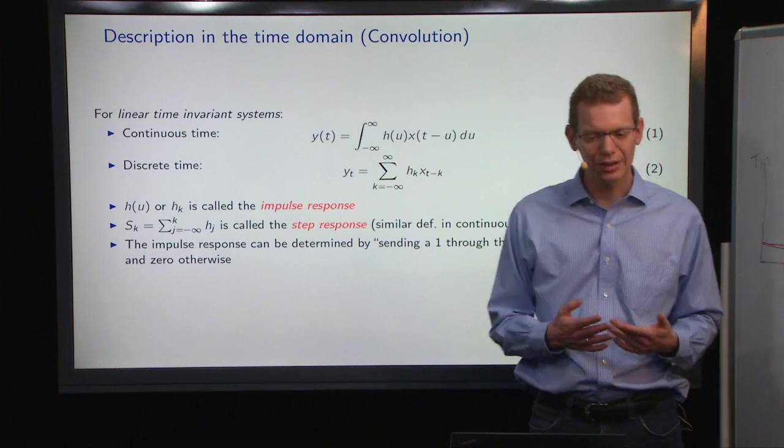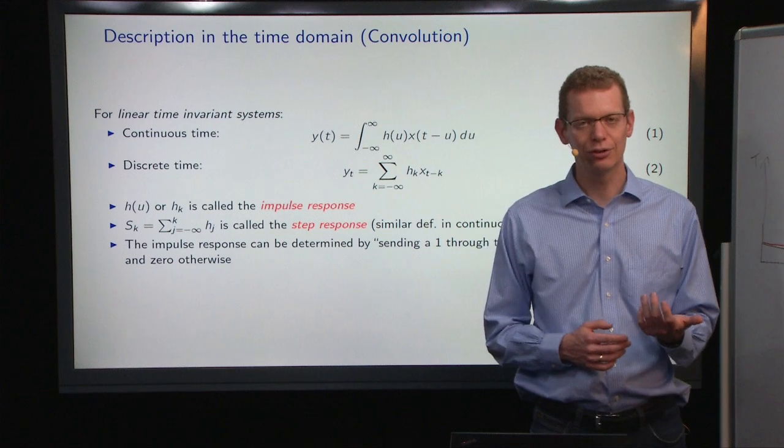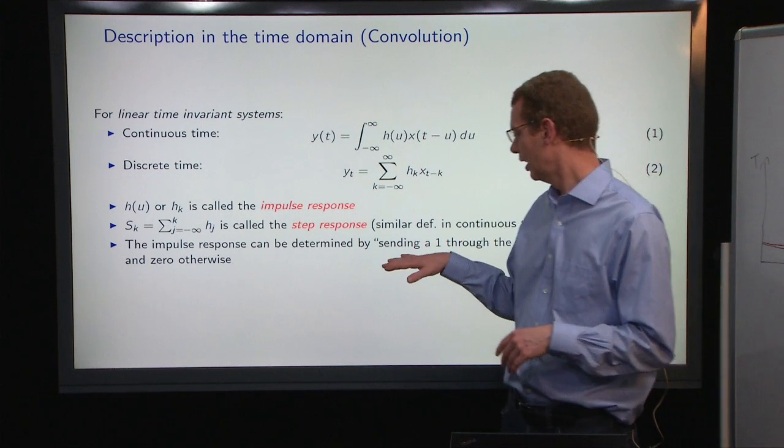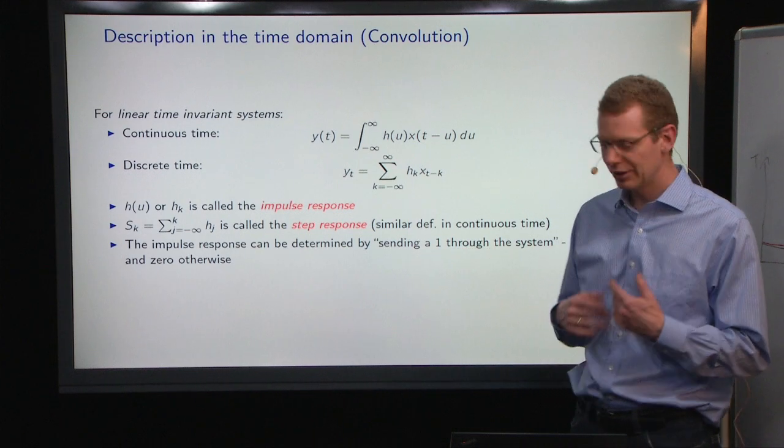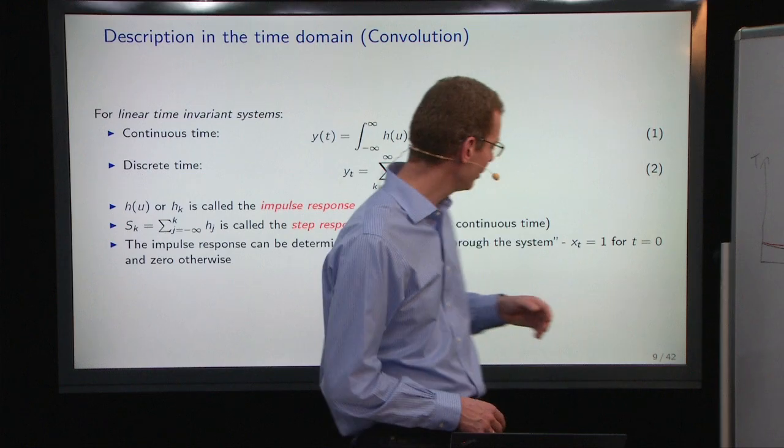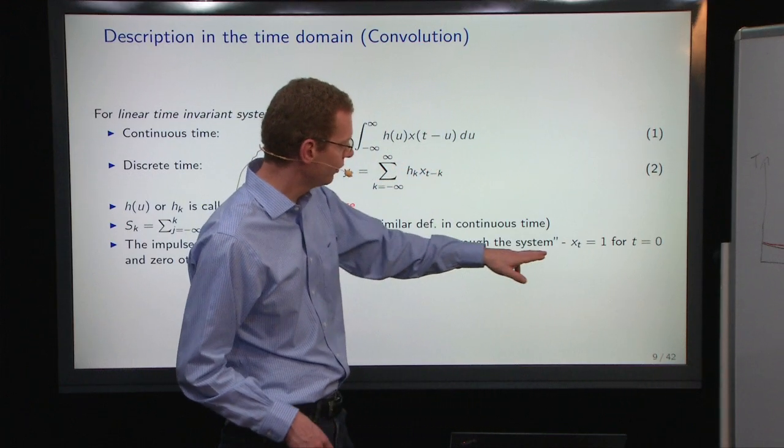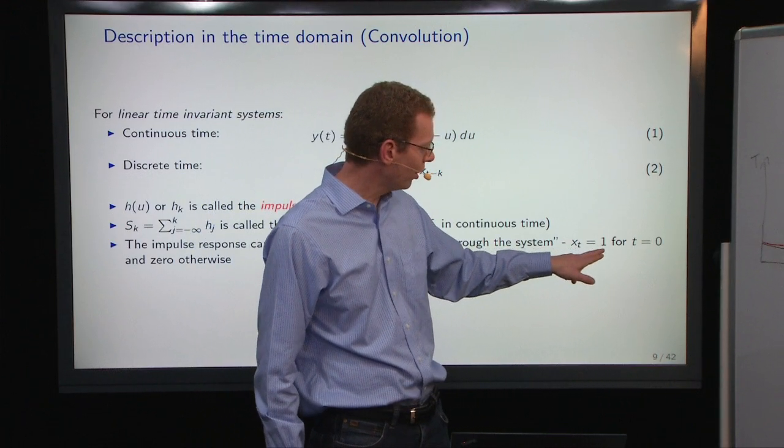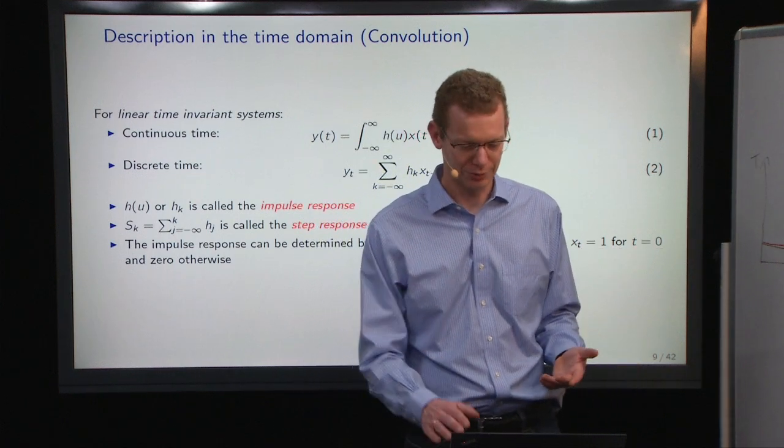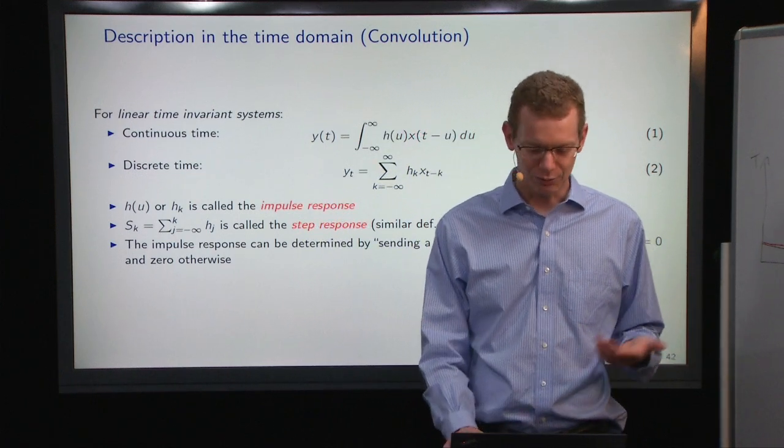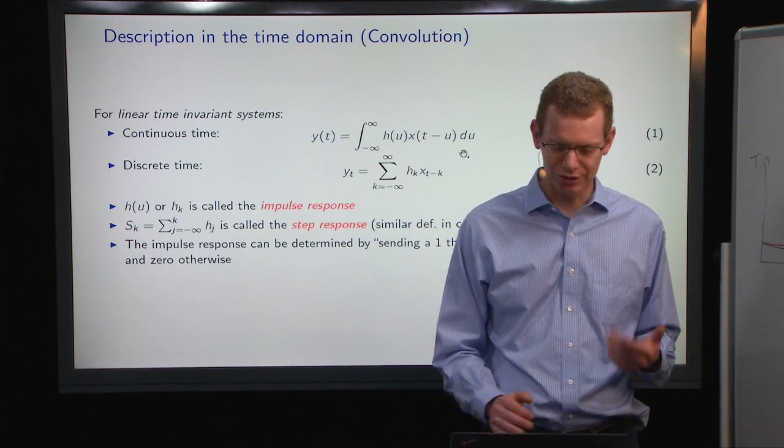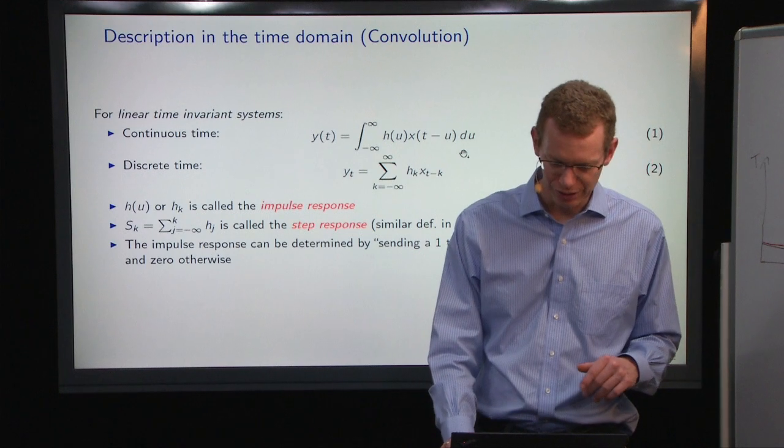So one thing that is nice is if you have a discrete system, what you can do is send a one through the system. In discrete time, sending a one means to take a Kronecker delta function, that is, Xt equals one for t equals zero and zero otherwise. So that's one way of identifying what are the coefficients h_k that are called the impulse response.